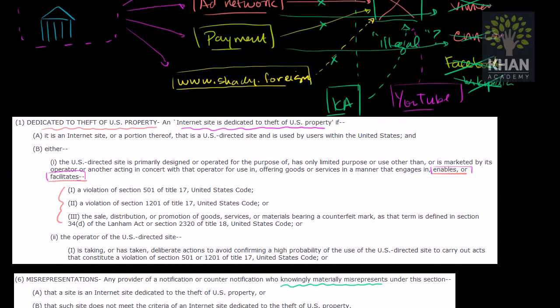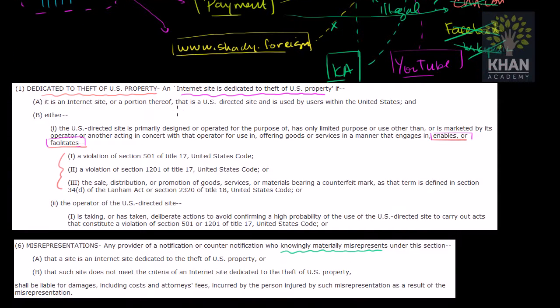And it gets even creepier than that, because to be considered this, you don't even just have to enable or facilitate, which is almost anything. One could argue even a computer is enabling or facilitating this on some level. But you are considered to be a site dedicated to theft of US property, even if you do nothing illegal, even if you don't even enable anything illegal, but if you just take actions that make it difficult for authorities to confirm that you're doing something illegal.